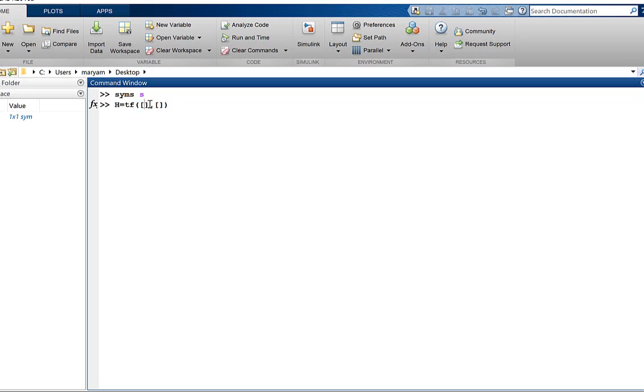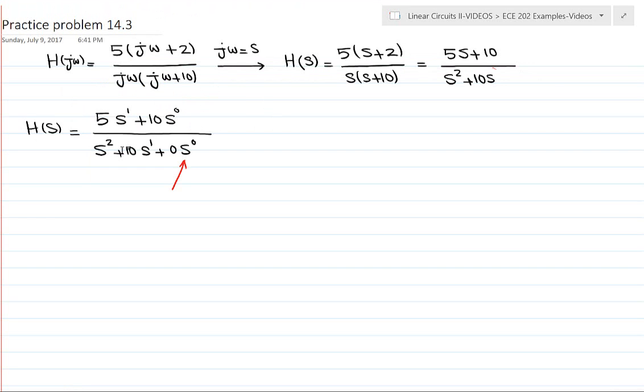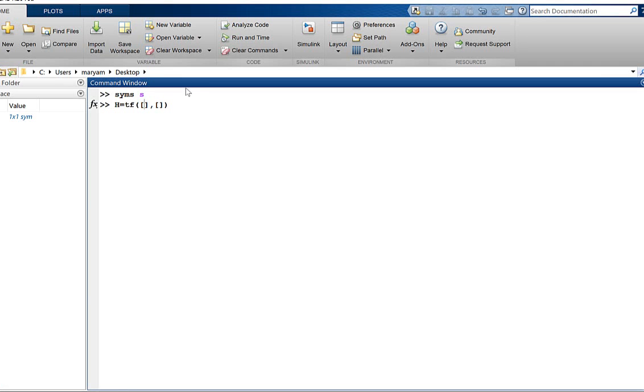The first part is the numerator and the second part is the denominator. So here I have to enter the coefficients of these s's in the numerator and denominator. In the numerator I have 5 and 10, and in the denominator I have 1, 10, and 0.